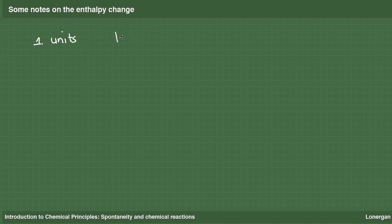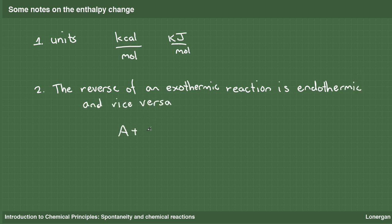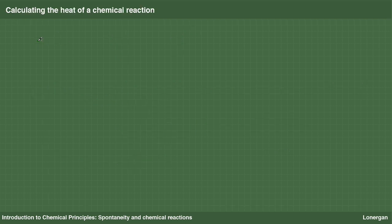A couple of notes on ΔH. First, the units of ΔH are a unit of energy per mole, for instance kilocalories per mole or kilojoules per mole. Second, the reverse of an exothermic reaction is an endothermic reaction, and vice versa. If reaction A plus B goes to C with heat as a product, that is exothermic. The reverse reaction, C goes to A plus B with heat as a reactant, is endothermic. If the direction of the reaction changes, the sign on ΔH changes. The enthalpy change is used to calculate the heat of a reaction involving specific amounts of reactants or products.